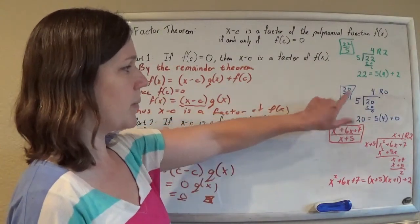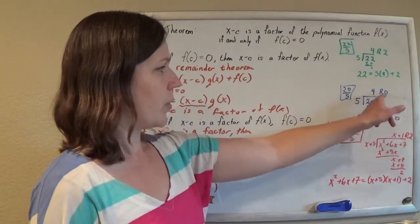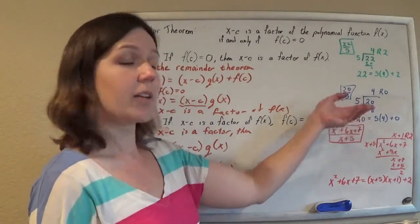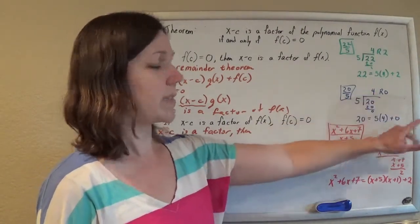Same thing here. If you had 20 divided by 5, you do 20 divided by 5 is 4 with no remainder. So then you would say, oh yeah, then 5 is definitely a factor of 20 because there was no remainder. You could write 20 is 5 times 4 plus 0.